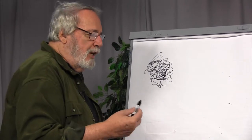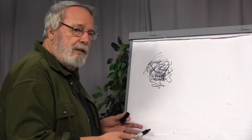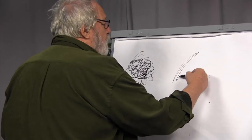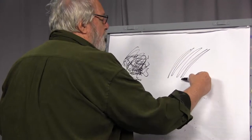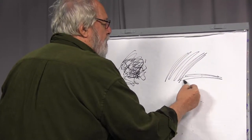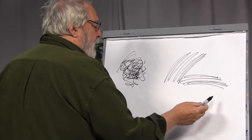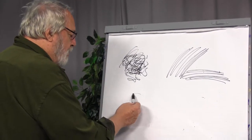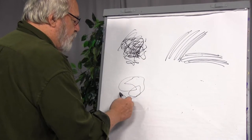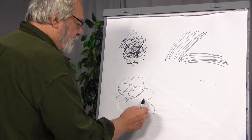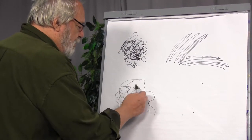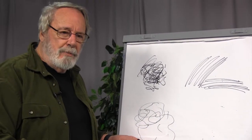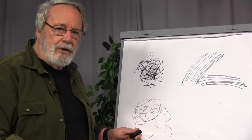Pretty soon, a child will move from this sort of random scribbling into vertical scribbling or horizontal scribbling. And then from that, they'll move into this other type of scribbling, which is kind of a circular scribbling. For some reason, this happens with a lot of children. This is still just a motor skill. It isn't meant to be an imaginary thing at all.